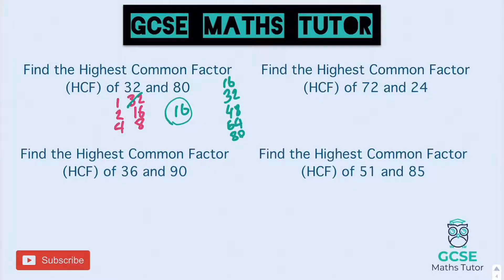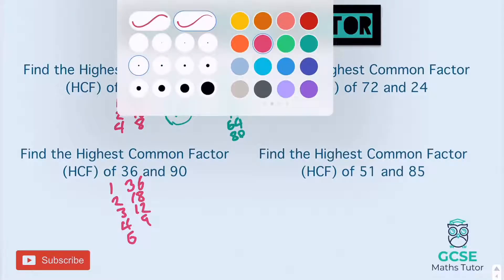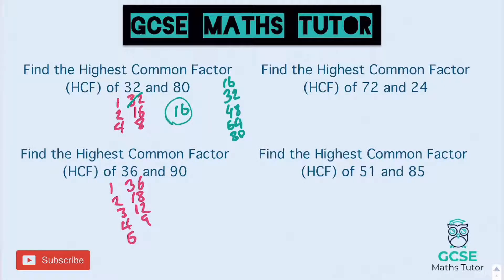Onto the second one: 36 and 90. Factors of 36: one and 36, two and 18, three and 12, four goes in nine times, five doesn't, six does — six goes in six times. Now process of elimination: 36 doesn't go into 90. Does 18 go into 90? If it does it'd be 18 times 5. Let's check: five times eight is 40, one times five is five, plus the four is 90. Yes! So 18 goes in, and that is our highest common factor.